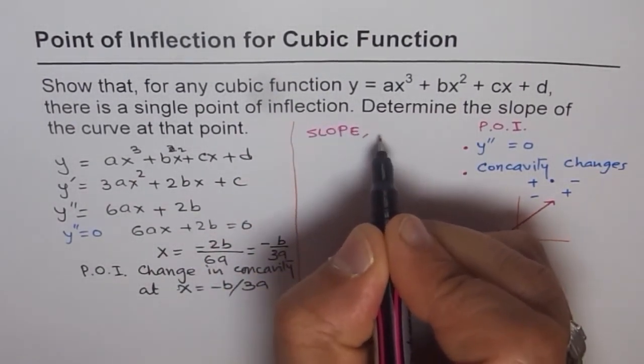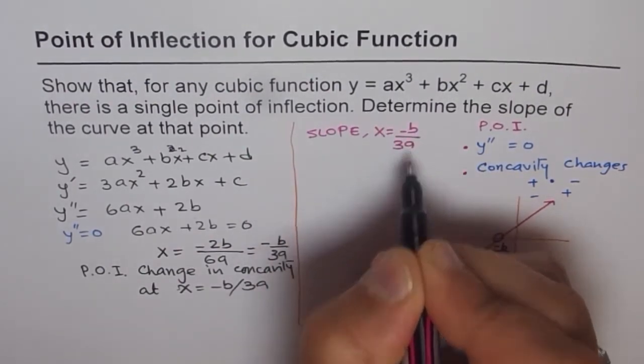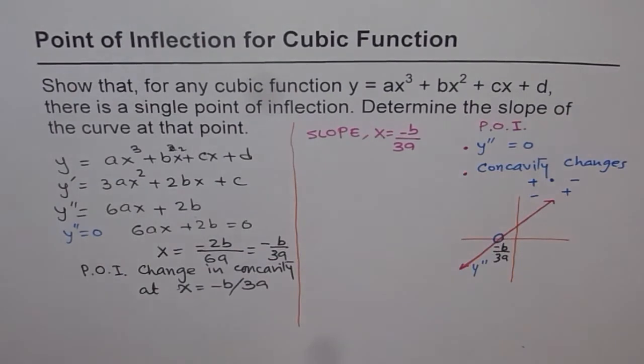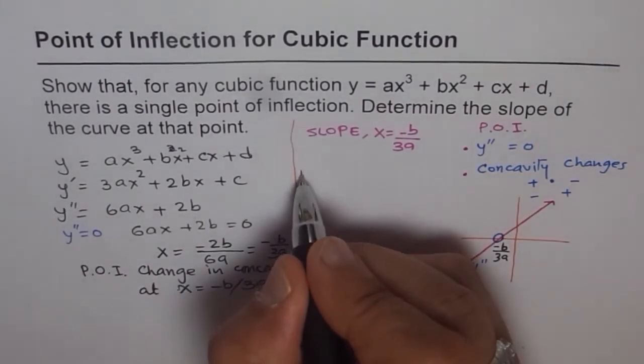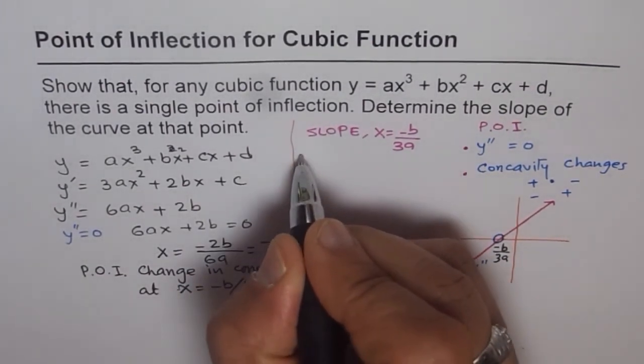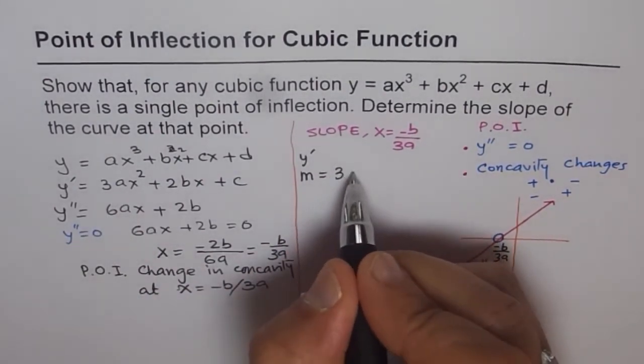We are finding slope at which point? At x equals to minus b over 3a. So what I will do is, I will simply substitute minus b by 3a in this equation. That is the slope, y dash. So I am writing m, which is same as y dash for me.